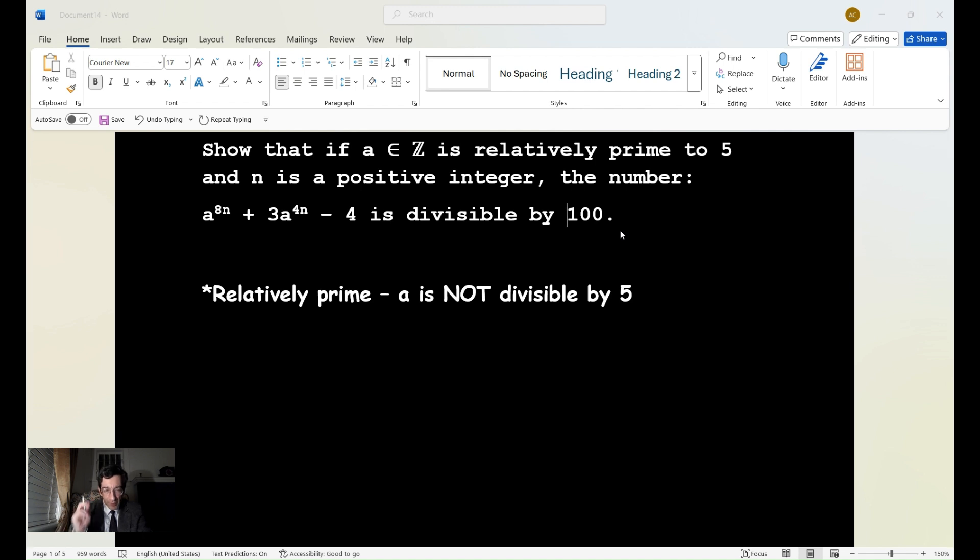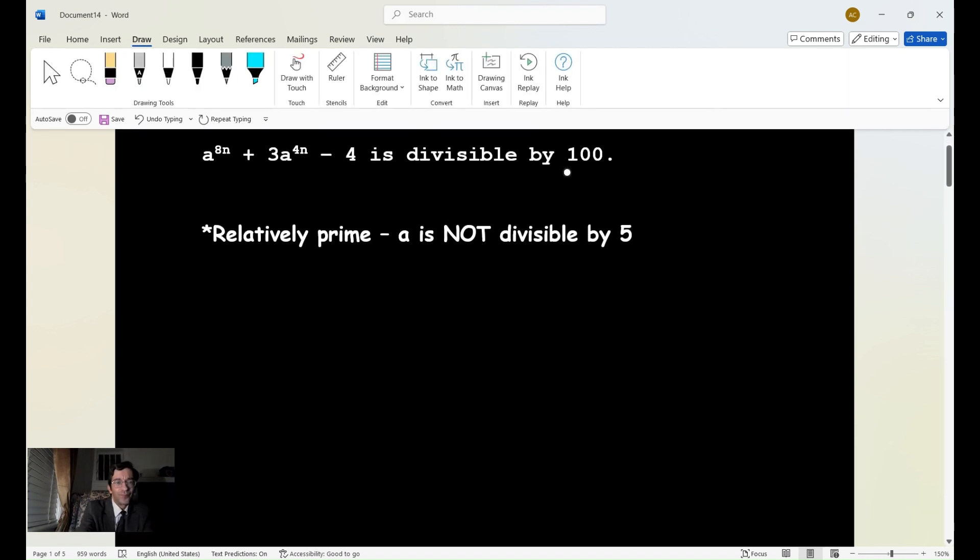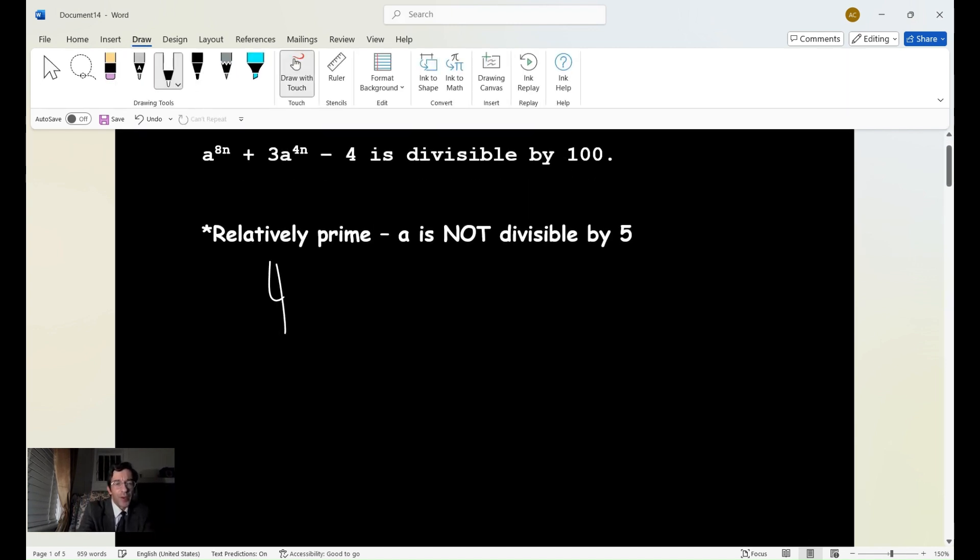we also have to understand that divisibility by 100 also means divisible by 4 and 25. And why is that? Why are we using 4 and 25?